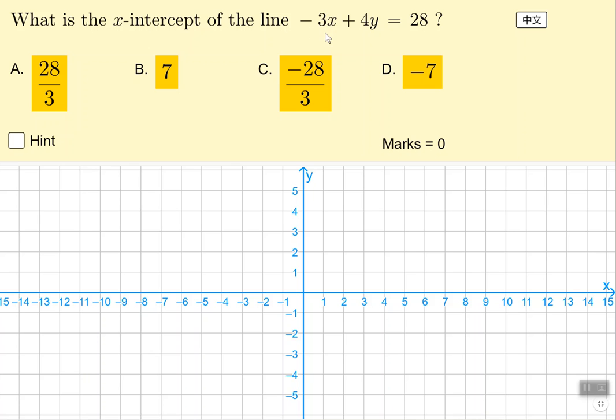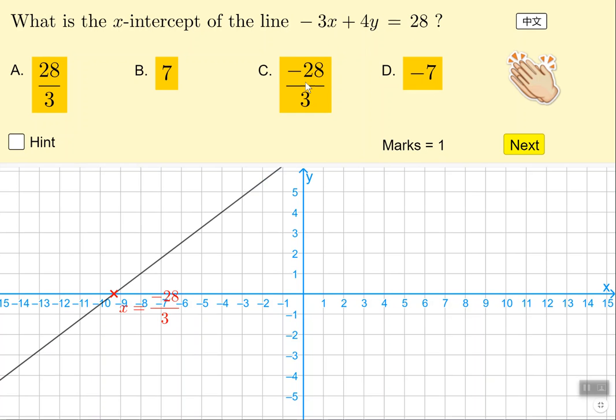The reason it's called reading is that you should be able to just calculate by making the y value 0 to get the x-intercept. So you can make the y value 0 and literally read 28 over -3, or -28 over 3.